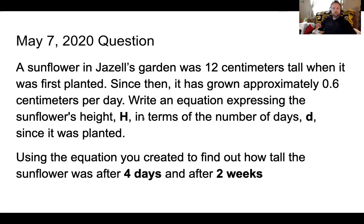On Tuesday you were asked to find an equation to talk about the sunflower in Giselle's garden. We know that it was 12 centimeters tall when it was first planted. Since then it has grown approximately 0.6 centimeters per day. So you were asked to write an equation expressing the sunflower's height H in terms of number of days since it was planted.